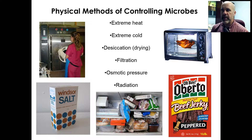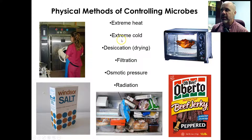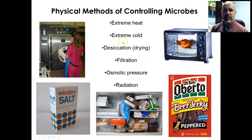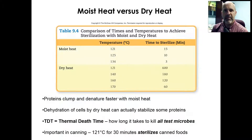Now, what do we mean by physical methods of controlling microbes? We're going to talk about six different types: extreme heat and cold, desiccation or drying, filtration, osmotic pressure, and radiation. The ones we'll mainly focus on are going to be associated with temperature — extreme heat especially. There are lots of different methods used for controlling microbes physically.